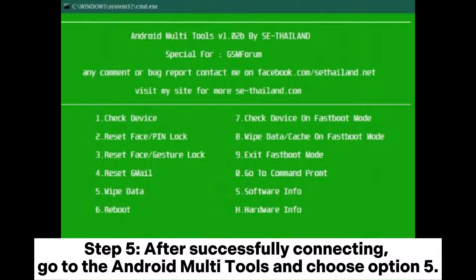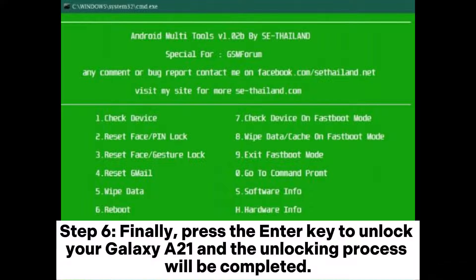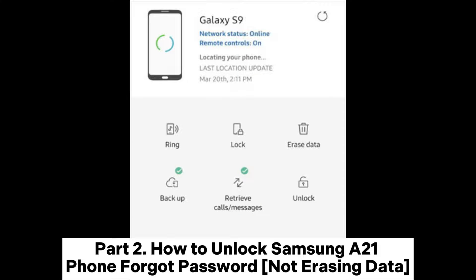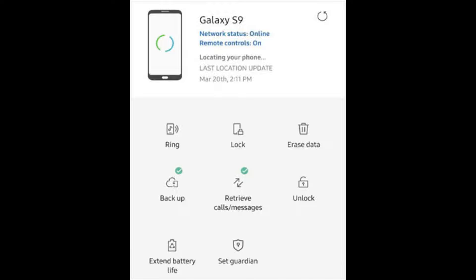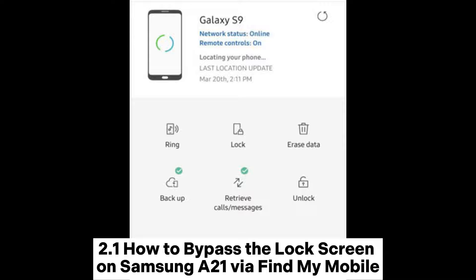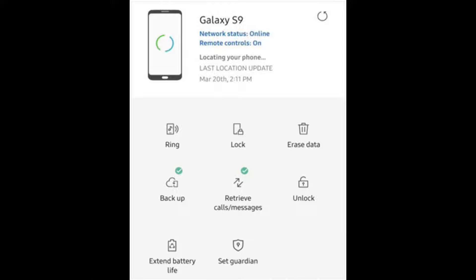Step 4: When your Samsung A21 is in Android boot mode, connect it to the computer using a USB cable. Step 5: After successfully connecting, go to Android Multi-Tools and choose option 5. Step 6: Press the enter key to unlock your Galaxy A21 — the unlocking process will be completed. Part 2: How to unlock Samsung A21 phone with forgot password without erasing data. Section 2.1: How to bypass the lock screen on Samsung A21 via Find My Mobile.